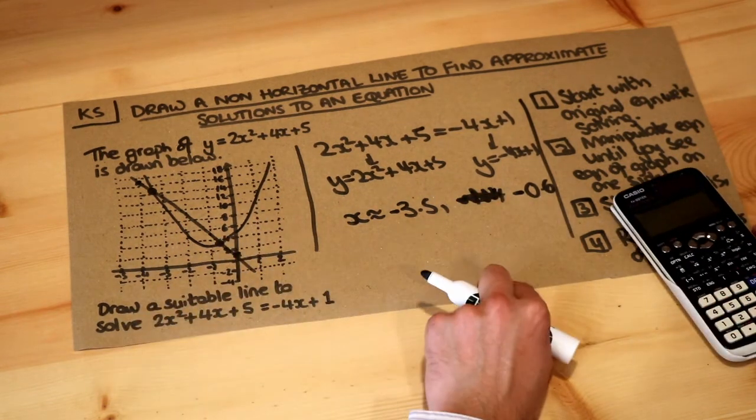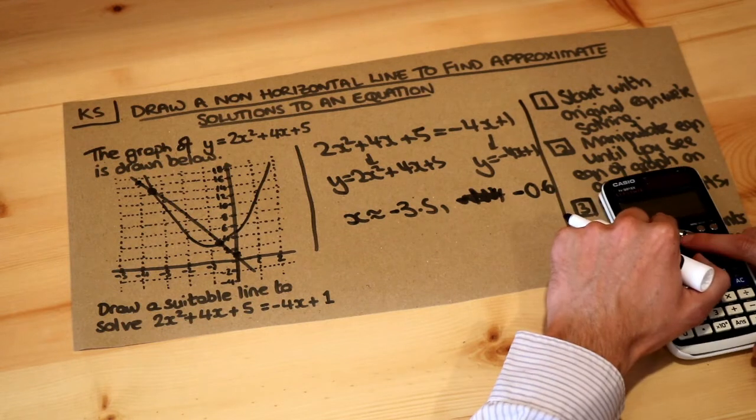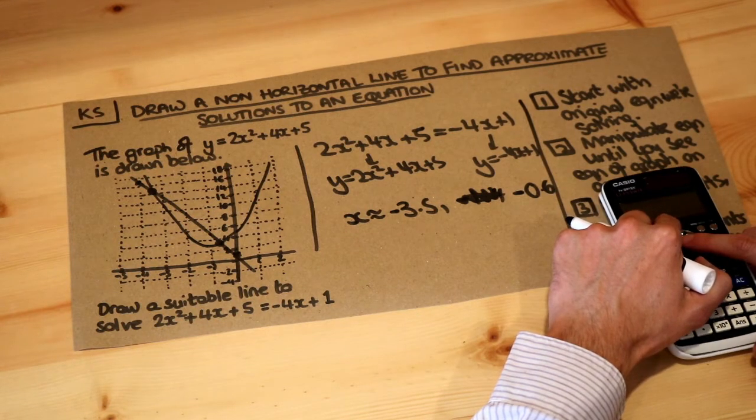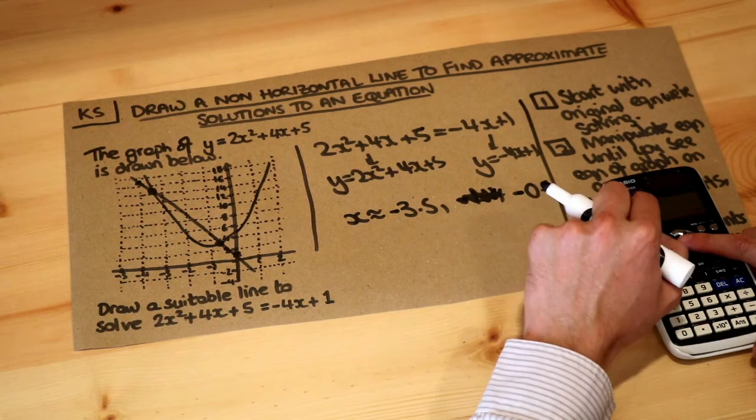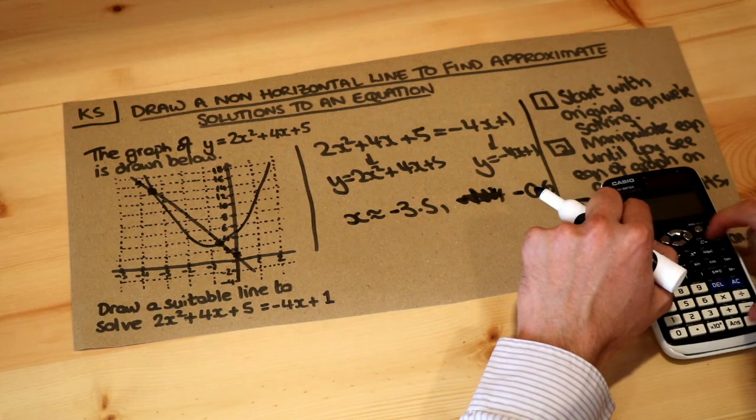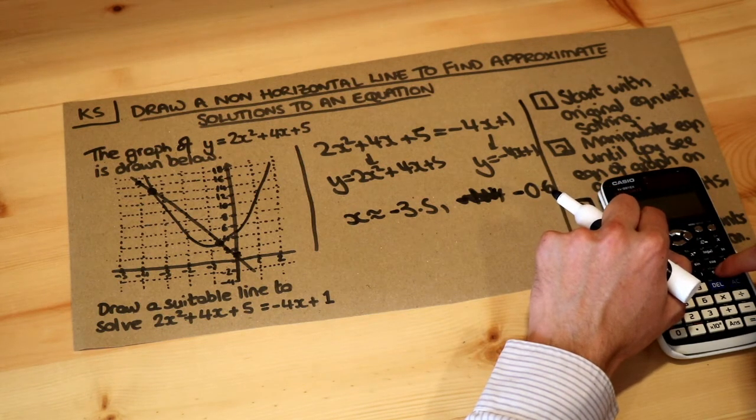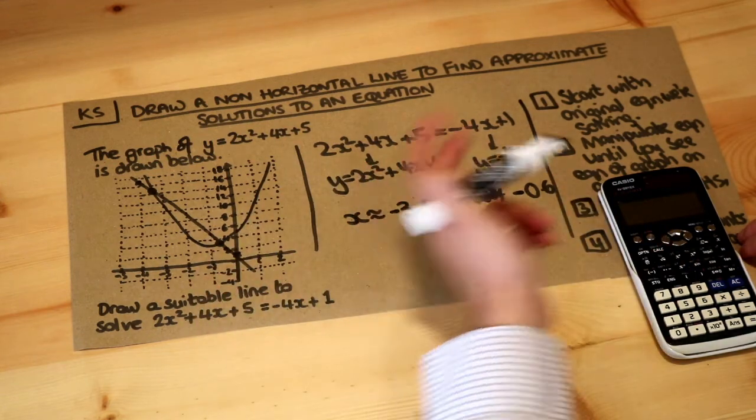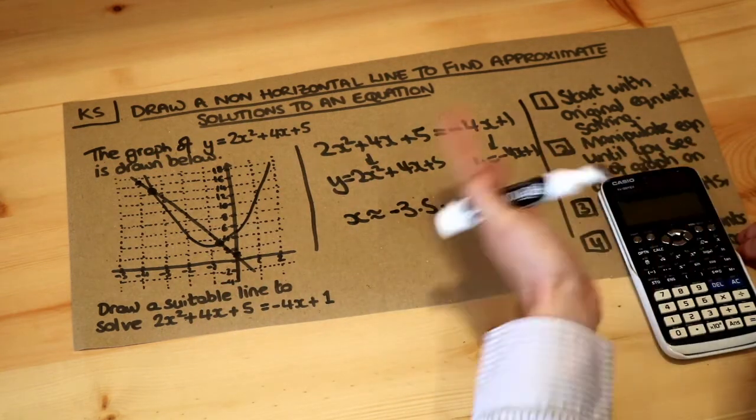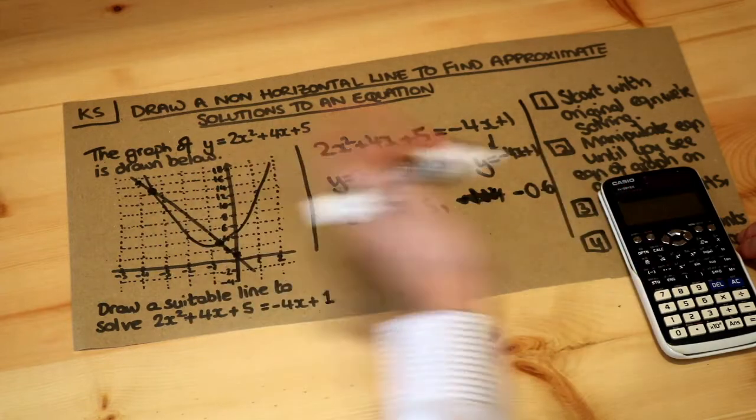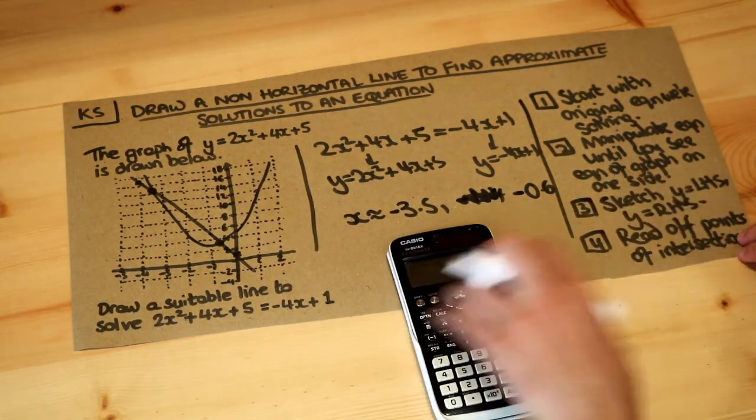We've got these two approximations, and in fact if we find exact solutions to this equation using the quadratic formula, we can see how good my estimates are. We actually have solutions of minus 0.5857, that's good enough to one decimal place, and the other one is minus 3.414, which is close enough. I was off by 0.1 to the nearest one decimal place, but that's good enough, and you would have a more accurate graph.